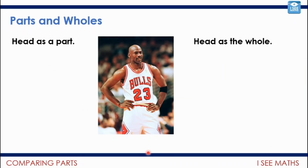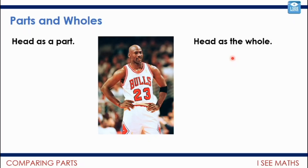Let's think about parts and wholes using Michael Jordan's head as an example. If the head is the part, then the body is the whole — a head is part of a body. But if the head is the whole, then the face or the ear is a part of the head. Similarly with Brazil: Brazil is part of South America, but if Brazil is the whole, then Rio de Janeiro or the Amazon Basin are parts of Brazil. The Amazon Basin is a larger part of Brazil than Rio de Janeiro.